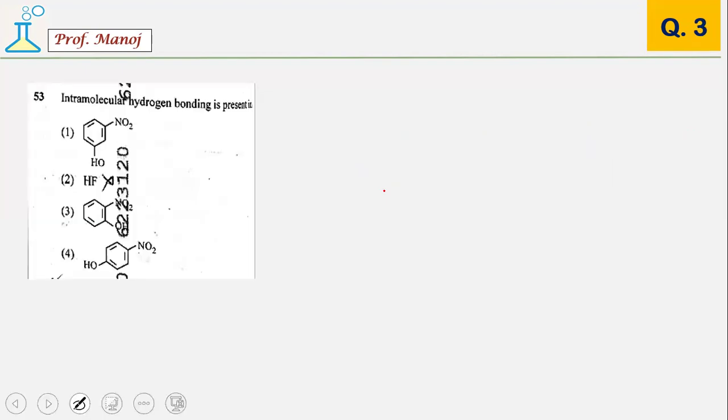They are asking about intramolecular hydrogen bonding. A simple condition exists that the two functional groups in aromatic ring have to be on the ortho position so that they can create intramolecular hydrogen bonding, which we can clearly see between these two groups. The answer is 3.